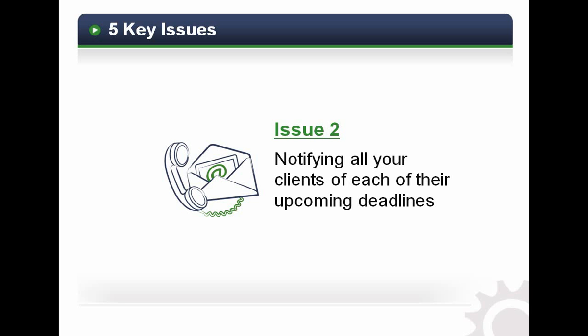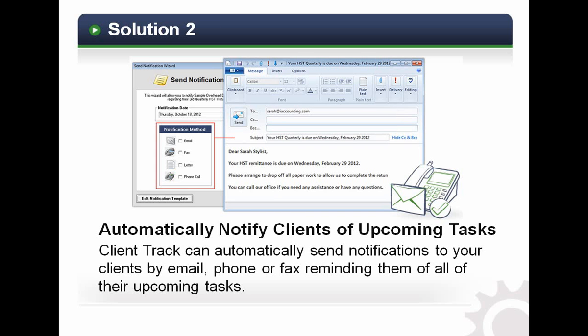The more you can organize it, control it, and have a record-keeping process to identify the exact status of every single task — which clients have brought their stuff in, which haven't, what you're waiting for — the more you can control that process. The first step is to allow Clientrack to send an email to the client notifying them just before the task comes due that they need to bring their stuff in. That way thousands of emails go out through the system, giving clients a heads up to be more proactive. You can send notifications by email, fax, letter, or phone.